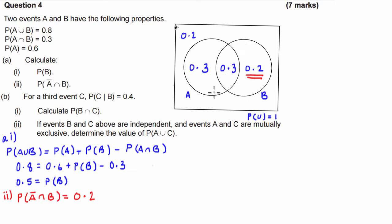So the only part of this Venn diagram which is in B and it's not in A simultaneously is this piece. Because this piece is in A and this piece is not in A. So this is our 0.2 section.